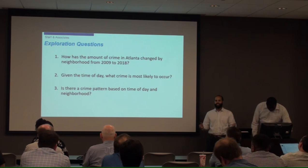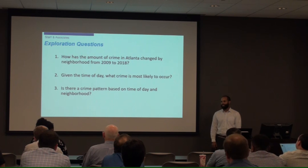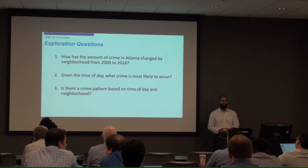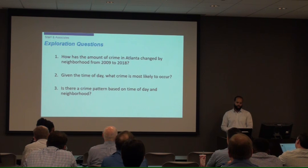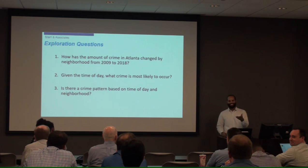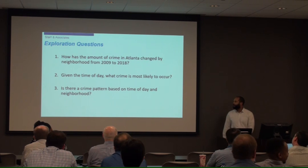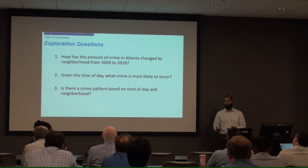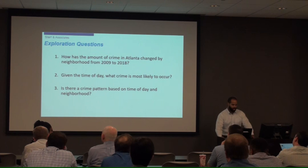The questions we're using to explore the data today: first, how has the amount of crime in Atlanta changed by neighborhood over the last decade? Second, given the time of day, which crime is most likely to occur — are you more likely to be burgled at 7 a.m. or 7 p.m.? And last, is there a crime pattern based on crime type within a neighborhood, like the crime waves you hear about on the news?